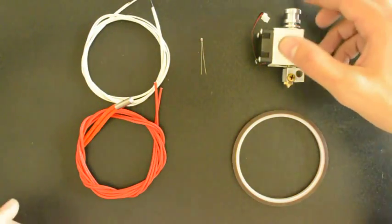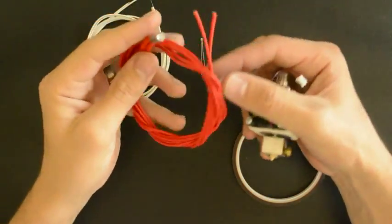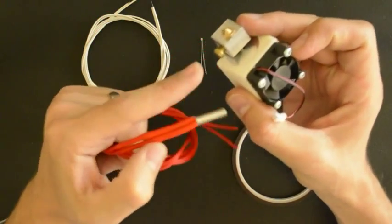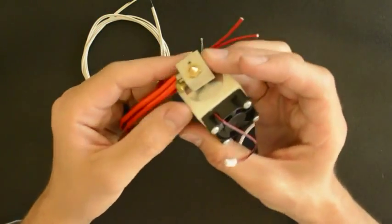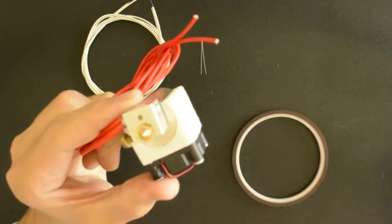Now we will insert the heater cartridge and the thermistor into the hot end. So we take the heater cartridge, insert it into the hole provided from the same side as the brass screw, and then we tighten it. Tighten the grub screw at the bottom.